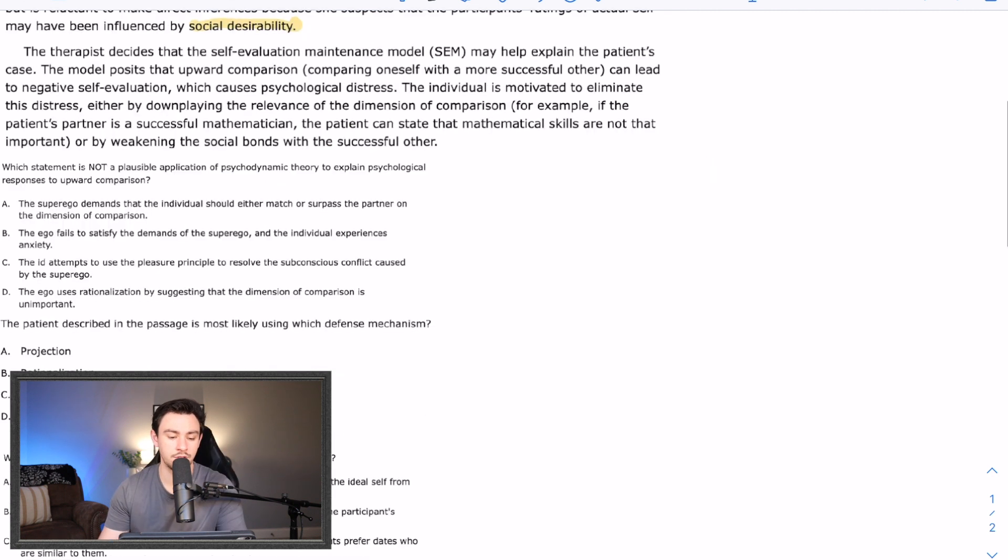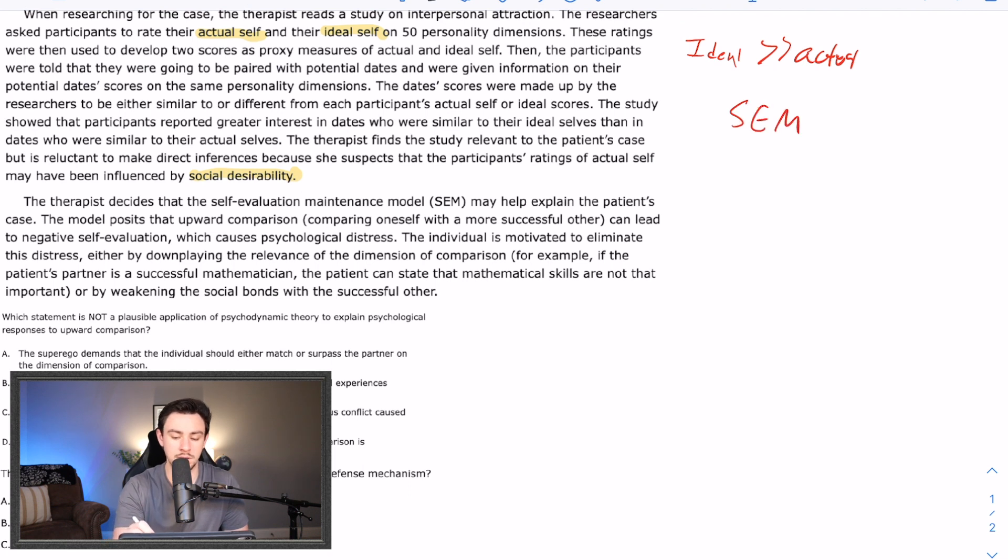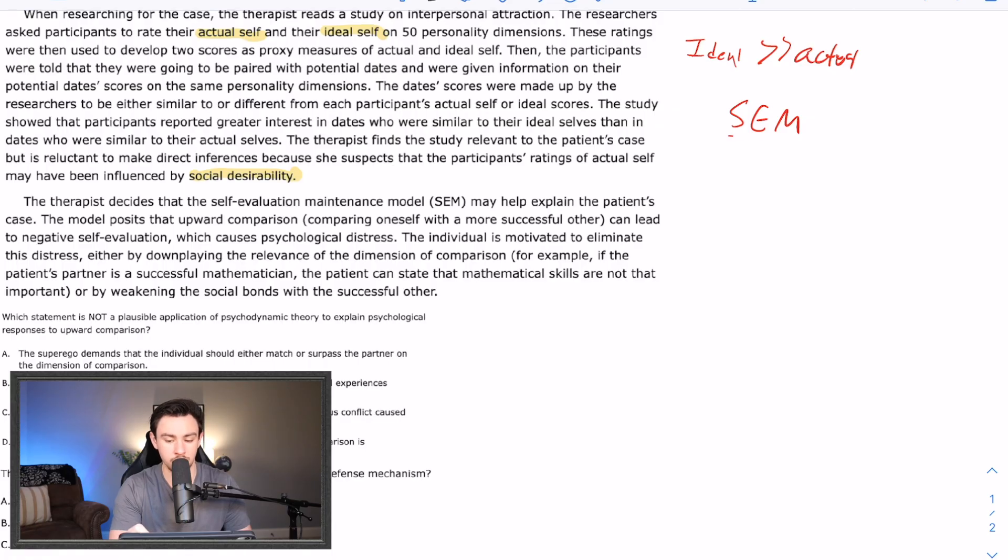It kind of makes sense. You know, you're attracted to somebody that is doing the things and being the person that you would like to be and the things that you would like to perceive yourself as enjoying. So that kind of makes sense. The therapist decides that the self-evaluation maintenance model, which we're going to call SEM, apparently, may help explain the patient's case. So if they introduce like a model or something like that, they're probably going to tell you what it is, and then you're going to have to have that in your flowchart. So I'm going right now. Now, the model posits that upward comparison, comparing yourself to a more successful other, like Ryan Reynolds, perhaps, can lead to negative self-evaluation, which causes psychological distress. It happens when I think about Ryan Reynolds. So what we're going to say that this SEM model is we're going to have an upward comparison. So an upward comp, which is going to lead to a negative eval and distress.